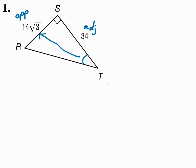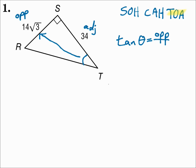Should I use sine, cosine, or tangent to answer this question? Remember SOHCAHTOA. Since I'm using opposite and adjacent, that's TOA — tangent. Tangent of theta equals opposite over adjacent. Theta is a Greek letter that is used often for angle measures in trigonometry.